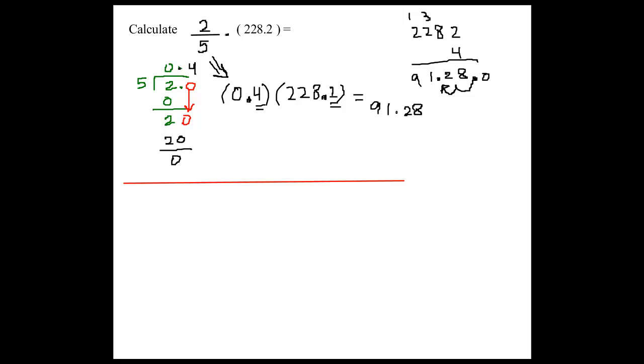Looking at that one, you only have one spot past the decimal. So that means it's tenths. So it would be 2,282 tenths. Oh no, no, 2,282 tenths. OK, because it's the 200. OK, I see. Very good. So that would be 2,282 over 10.